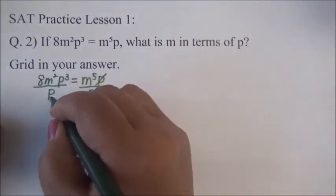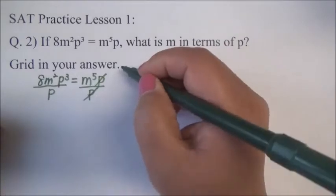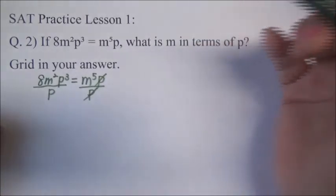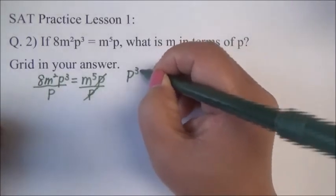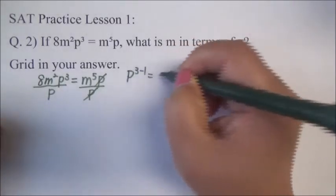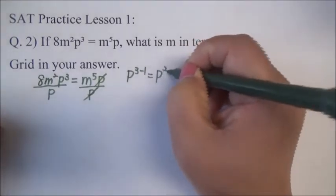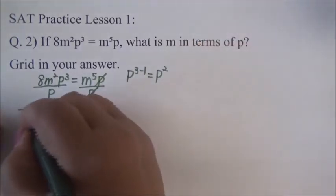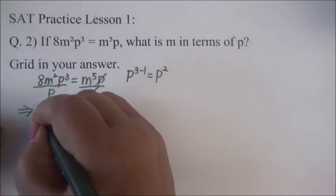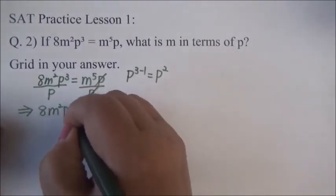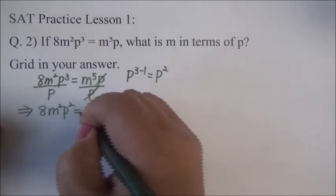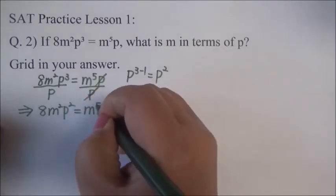So, this and this will be gone. And then, P cubed divided by P is same thing as subtraction of exponents. So, P3 minus 1 is equal to P squared. So, what is going to be? 8M squared times P squared is equal to M to the 5th power.